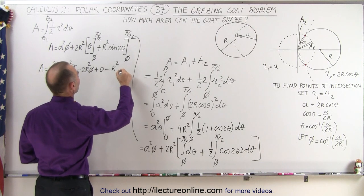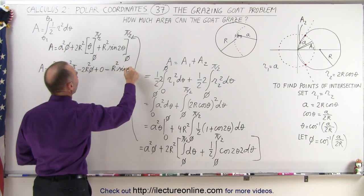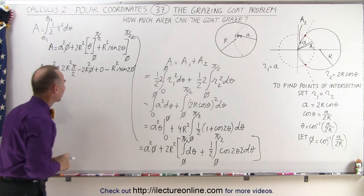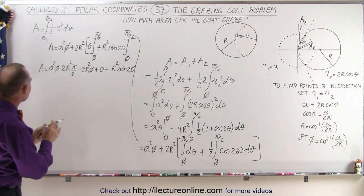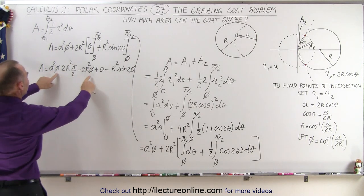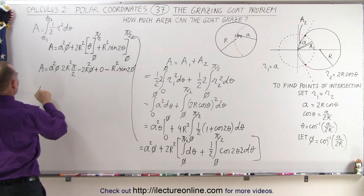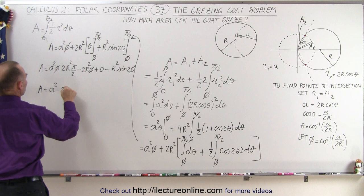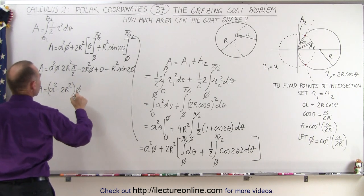...times sin(2φ). There we go. Now we want to clean that up. Notice φ appears twice, so the area is equal to (A squared minus 2R squared) times φ...